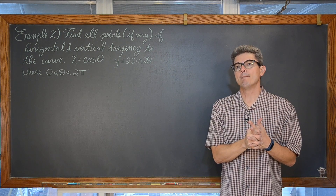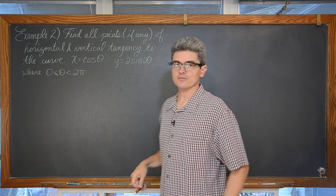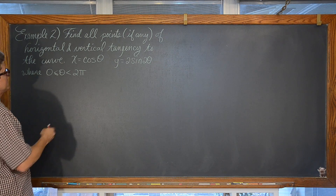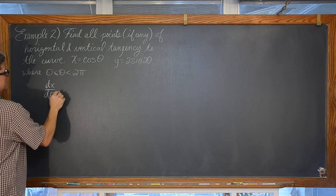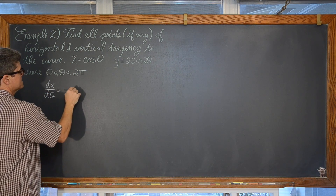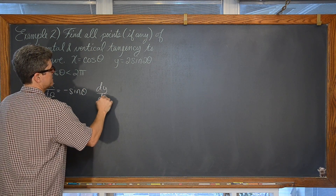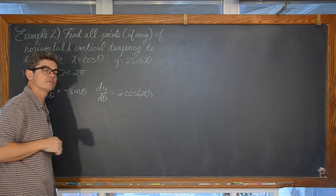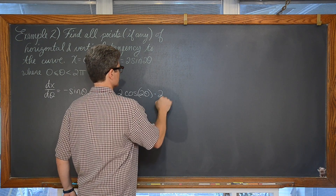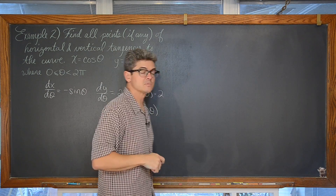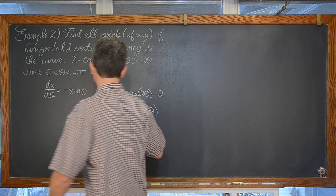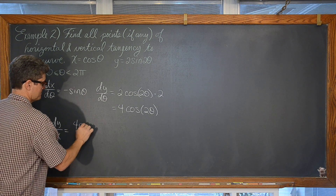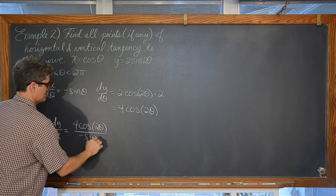If we are talking about horizontal and vertical tangency points, we need to look at the derivative. We are looking at dx/dθ — this time with respect to theta instead of t. The derivative of cosine is negative sine, so dx/dθ equals negative sine theta. For dy/dθ, applying the chain rule, we have 2 cosine of 2 theta times 2, giving us 4 cosine of 2 theta. Setting up dy/dx, we have 4 cosine of 2 theta over negative sine theta.